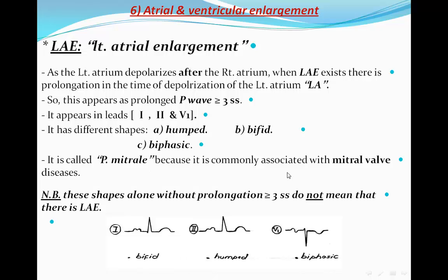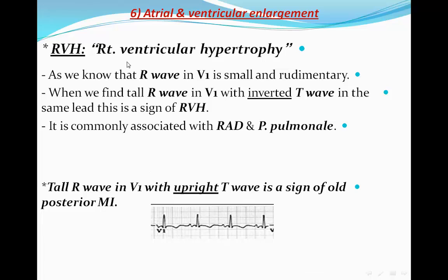Right ventricular hypertrophy (RVH): as we know, the R wave in V1 should be small and rudimentary. When we find a tall R wave in V1 with an inverted T wave in the same lead, this is a sign of RVH. It is commonly associated with right axis deviation. Note: a tall R wave in V1 with an upright T wave is a sign of old posterior MI, which is a different finding. This is an example of RVH — tall R wave in V1 with inverted T wave.